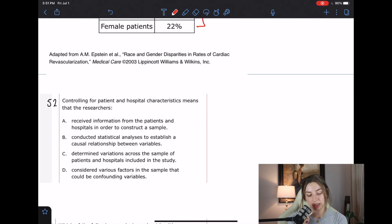52 says controlling for patient and hospital characteristics means that the researchers. So here we are. It's just a research methods question has nothing to do with the passage. Really? It's just asking, do you know the definition of what controlling for something means in research speak? If you're not familiar with what that means, I would definitely recommend you getting familiar with what that means. And that's not only for the MCAT, that's for research literacy in the future, because you're going to have to read research articles, either in your pre-med career or in medical school.